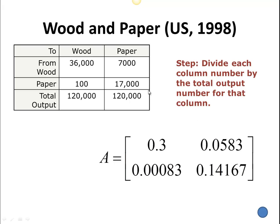That's basically what we do to convert from our input-output tables to our matrix — just divide the columns by the total outputs for each of those columns. Thanks, and hope that was helpful.